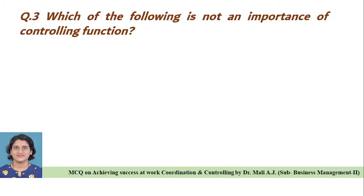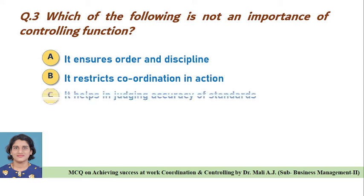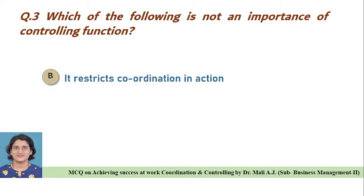Question three: Which of the following is not an importance of controlling function? Option A: it ensures order and discipline, Option B: it restricts coordination in action, Option C: it helps in judging accuracy of standards, Option D: it improves employee motivation. Correct answer is Option B, it restricts coordination in action — it is not an importance of controlling function.